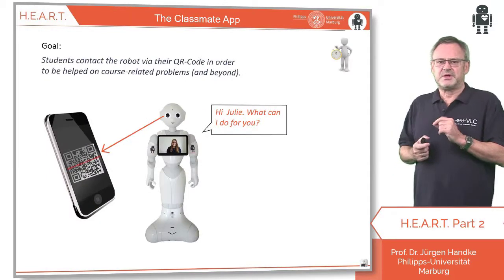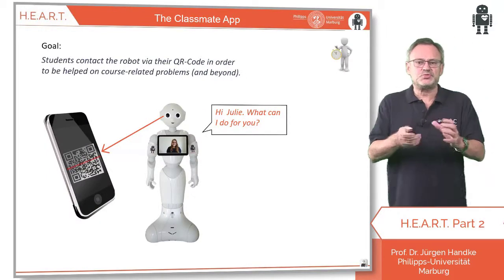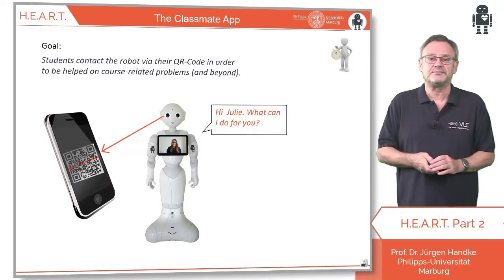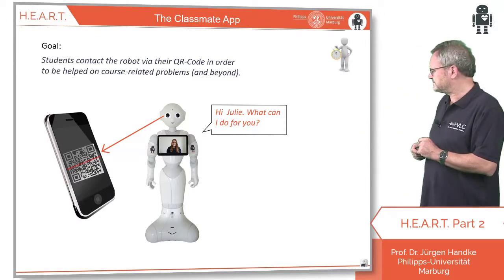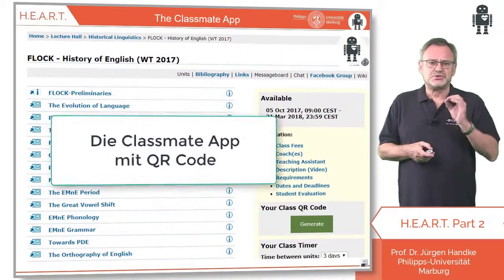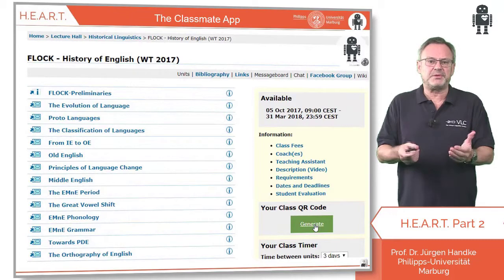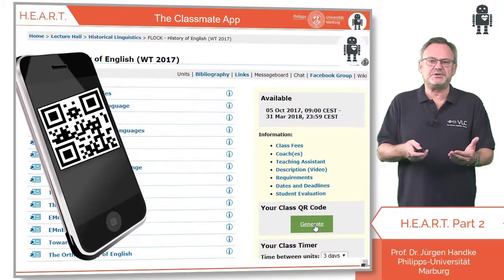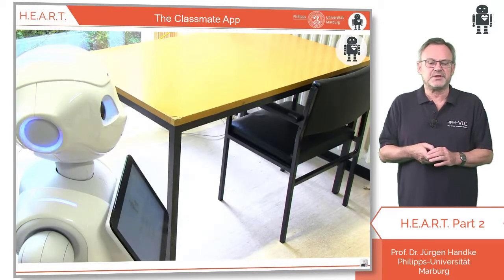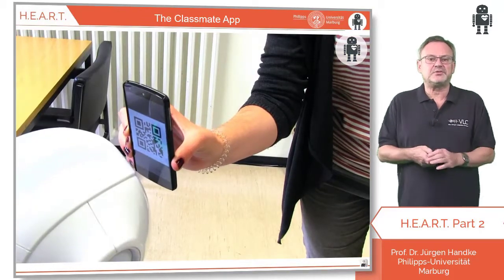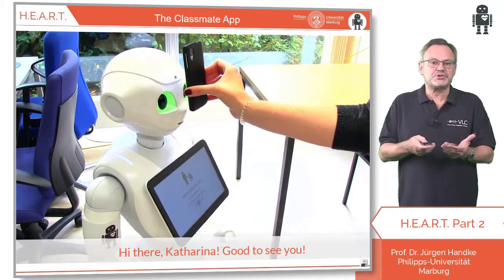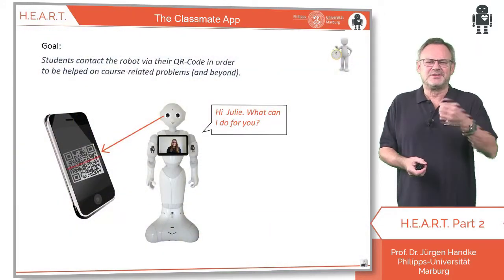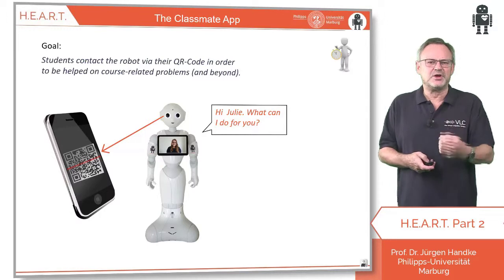Here is another app: with the Classmate app, students can contact the robot in order to be helped on course-related problems and beyond. First, students generate their individual QR code on our platform, the Virtual Linguistics Campus. With this unique code, which is less ambiguous for the robot than face recognition, the robot can be contacted and will enter into a dialogue that helps on user-specific course-related aspects. The benefit: human coaches can gain more time for individual assistance.